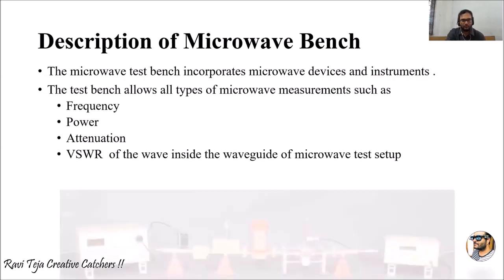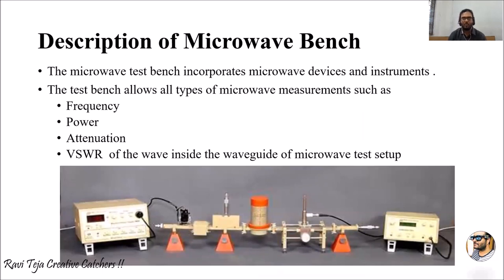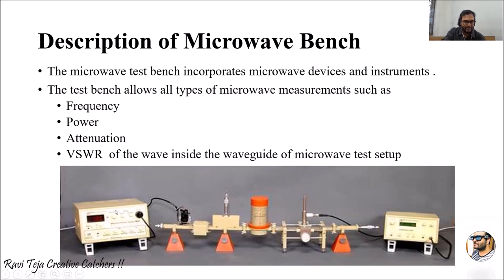Overall, the whole microwave bench setup has microwave devices as well as instruments used for measuring frequency, power, attenuation, and voltage standing wave ratio of a wave inside the waveguide. The setup consists of: klystron power supply, klystron mount, isolator, variable attenuator, and frequency meter connected to a slotted line section.